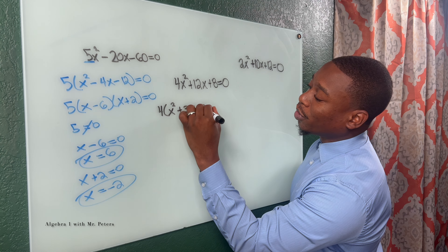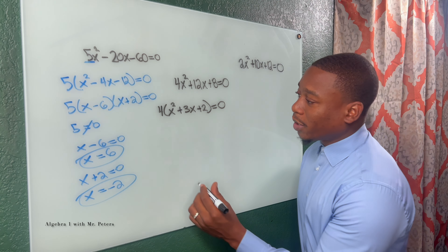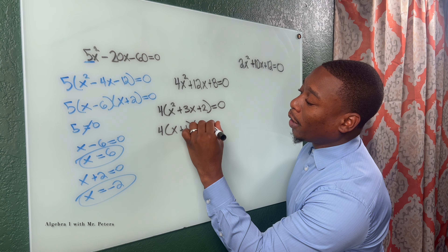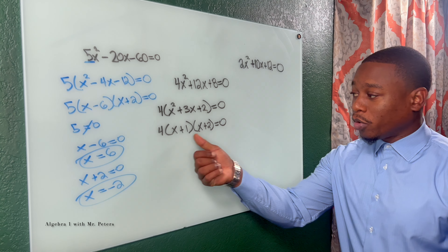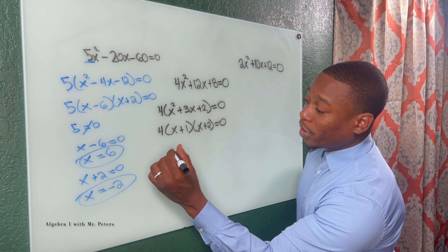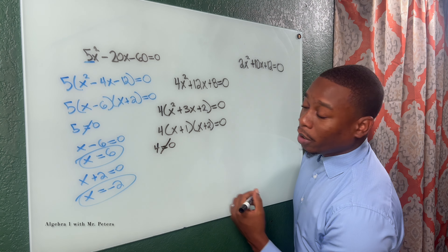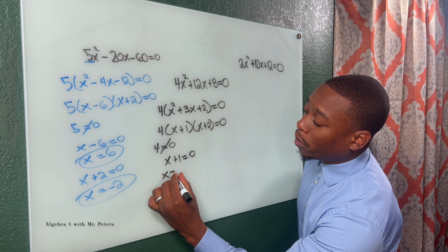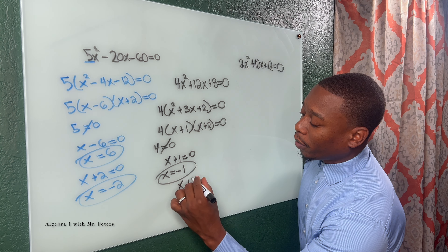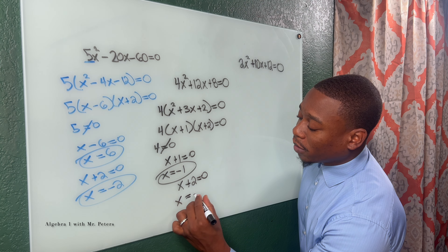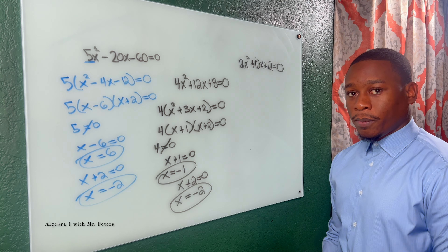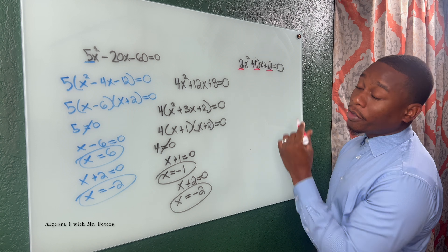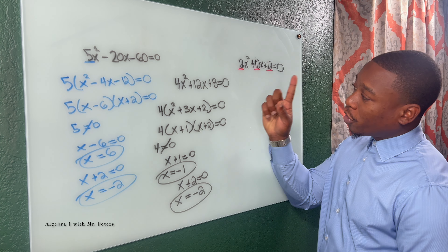Second GCF example — we can divide all three terms and pull a GCF of four out. When we pull that four out, everything gets divided by four, giving us x squared plus three x plus two equals zero. Focus on what's inside: the factors are x plus one times x plus two. When we multiply we get two, when we add we get three. Setting the GCF four equal to zero is not true, so we throw it out. So x equals negative one and x equals negative two.